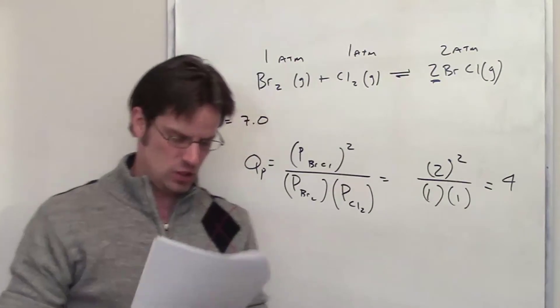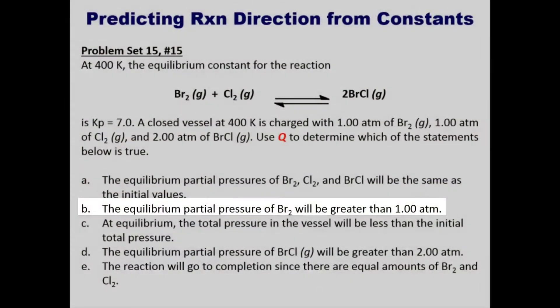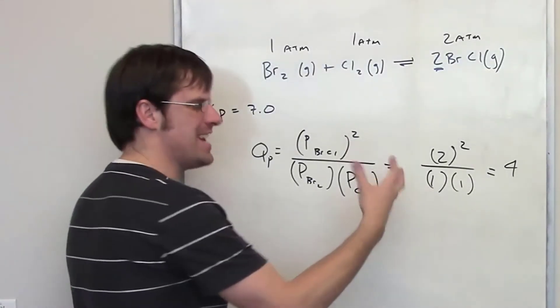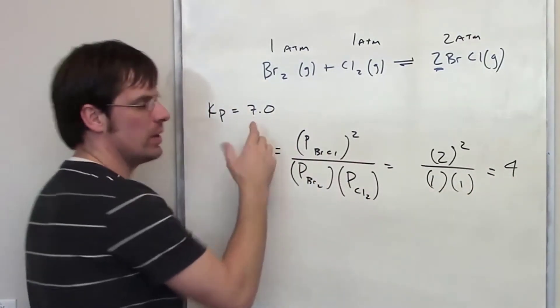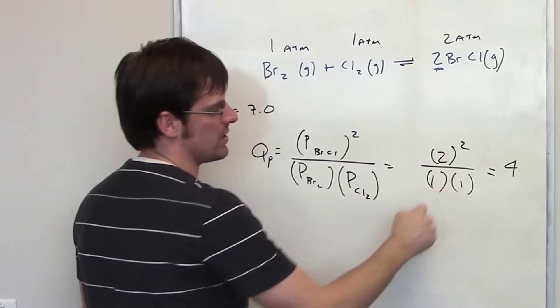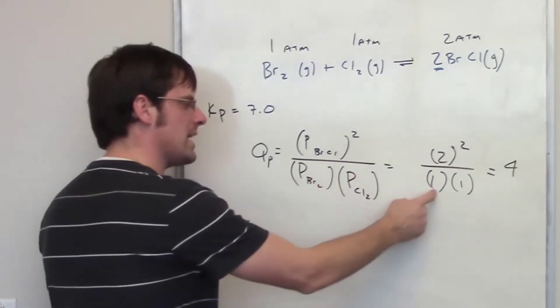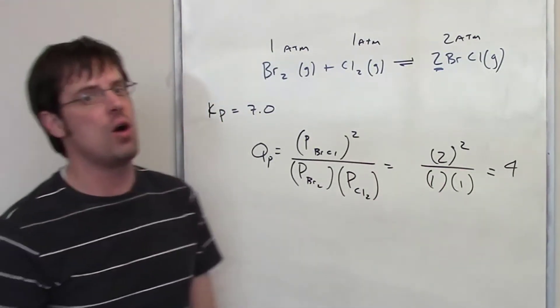Let's look at statement two. The equilibrium partial pressure of Br2 will be greater than one. Going back to what we've noticed here, what we need is for this number to go up to become seven. The only way you can do that is by increasing the numerator and decreasing the denominator. The denominator pressure Br2 is already at one so you're going to have to make it go lower. So that statement also is false.